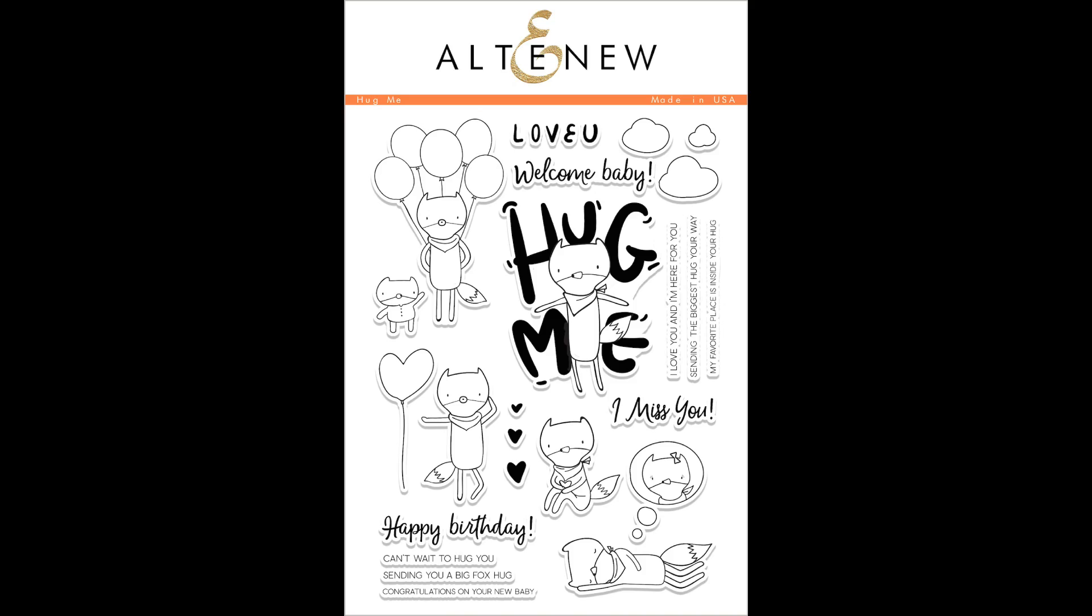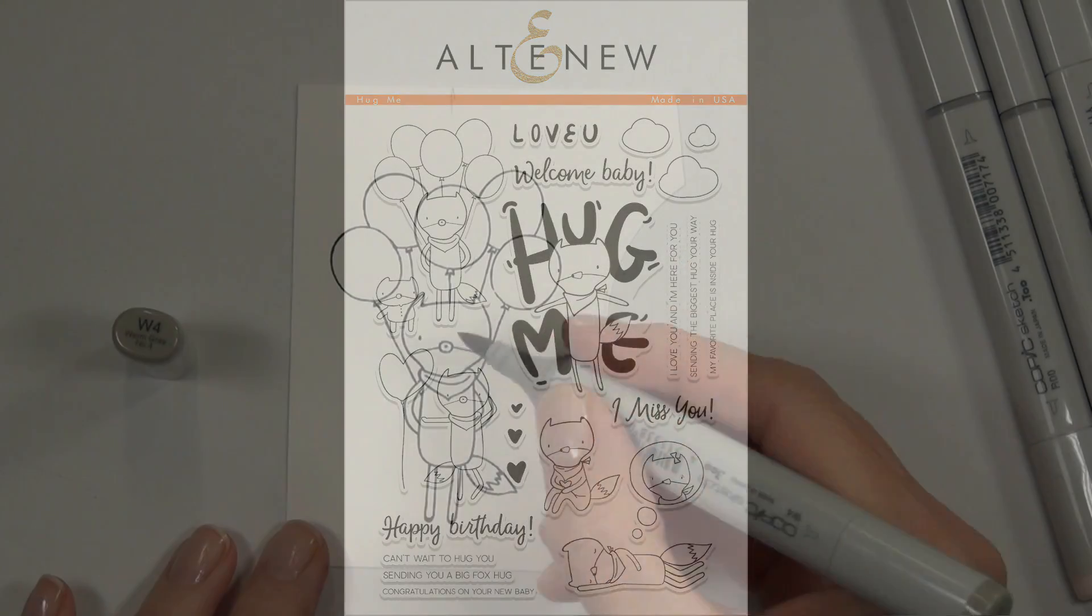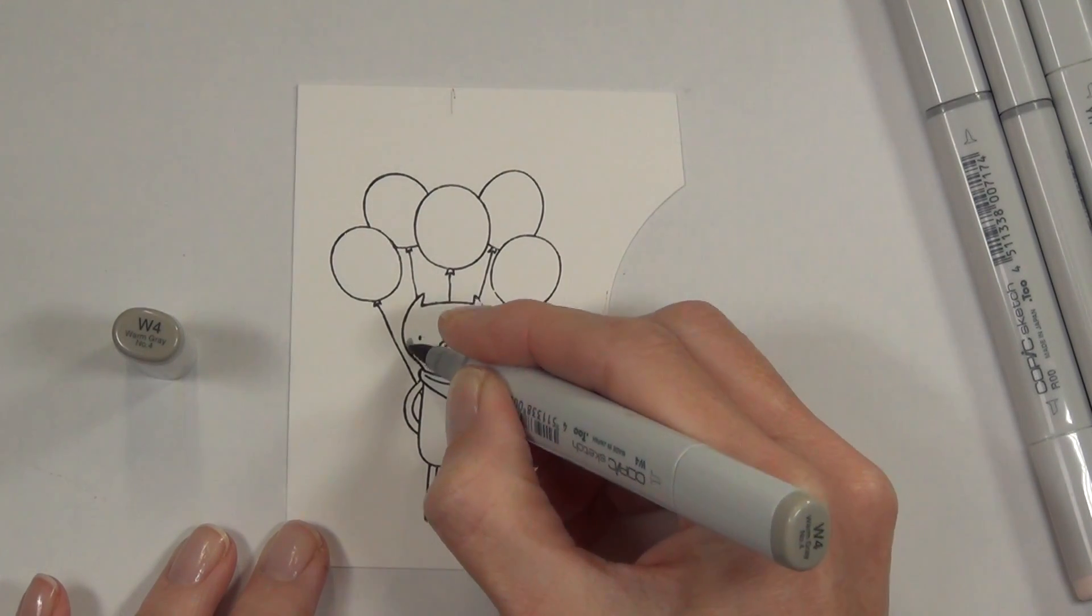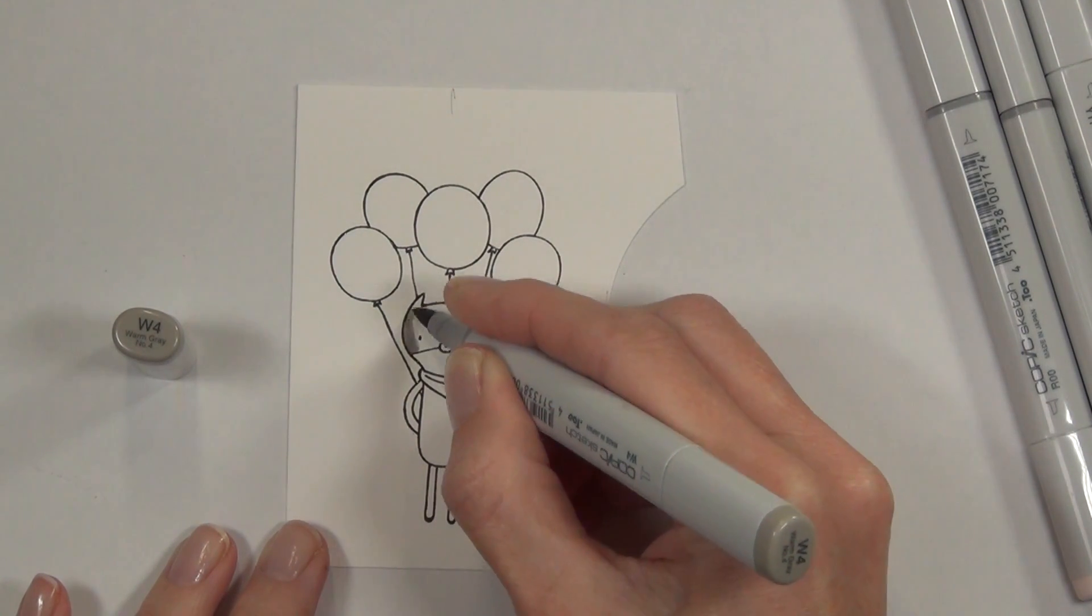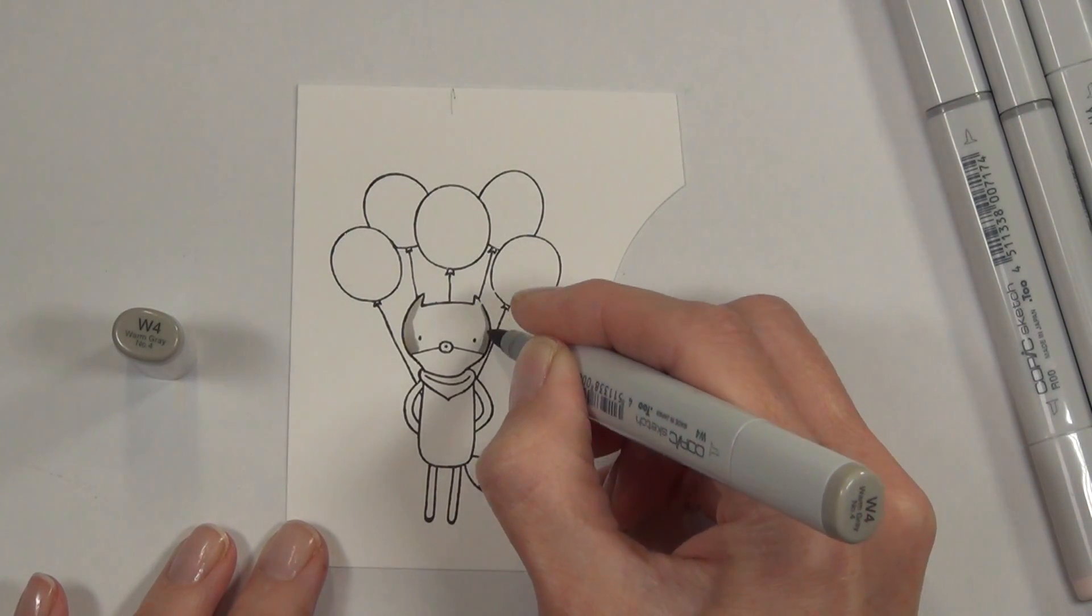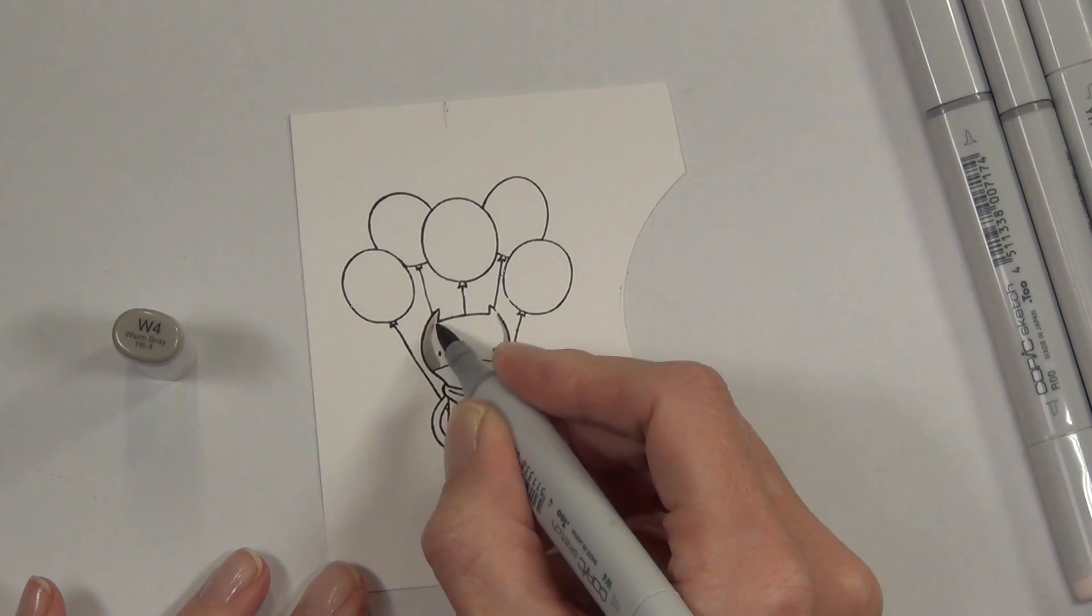I've stamped out one of the Fox images, the one with the balloons, and I've used the new permanent black ink from Altenew which is alcohol marker friendly.